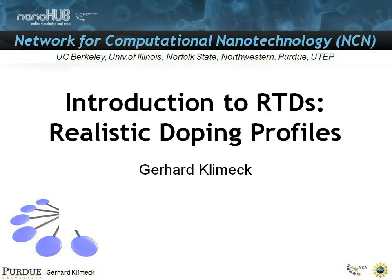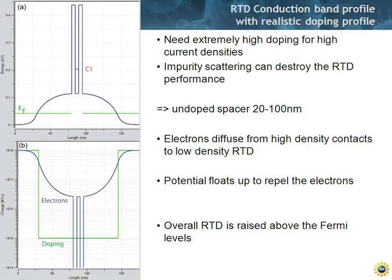So in this segment we will be talking about RTDs with realistic doping profiles. And in the previous section we looked at RTDs with linear potential drops. And I normally call those Mickey Mouse diagrams because you can very nicely explain the physics of RTDs, but that's not how they look.